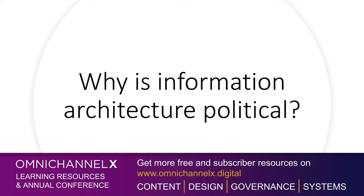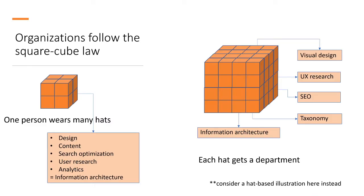I want to start by talking about why information architecture is political. A simple way to think about it is that your need for information architecture is driven by the need to align different models across different parts of the organization. In a small organization where you've really got one person handling the main content aspects, that person may be wearing many different hats — concerned about design, content, SEO, user research, and analytics.